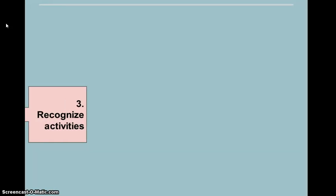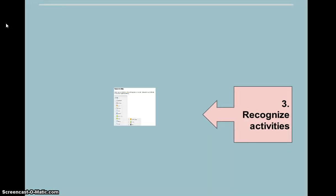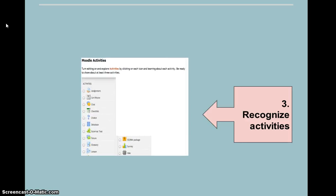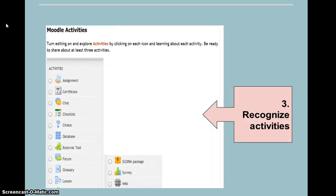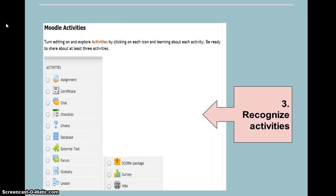The third easy step refers to activities necessary to apply strategies — activities such as assignments, wikis, mind maps, lessons, chats, forums, workshops, and others that you will need to organize your content.